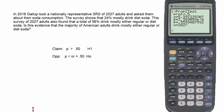This problem demonstrated how to perform a one-proportion z-test when given a percentage of the sample instead of the number x, and what to do when the resulting calculation gives a decimal instead of a whole number for x.